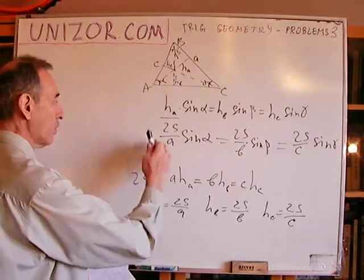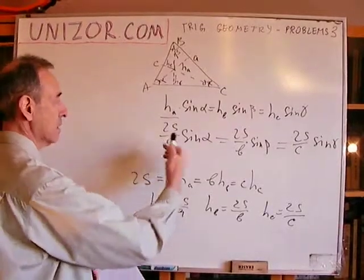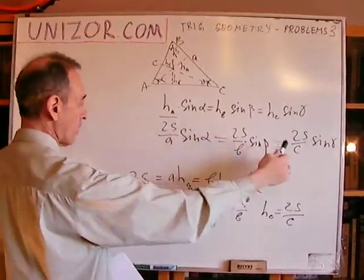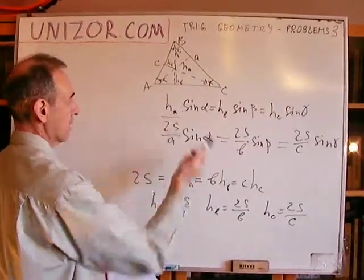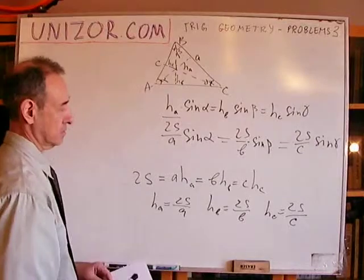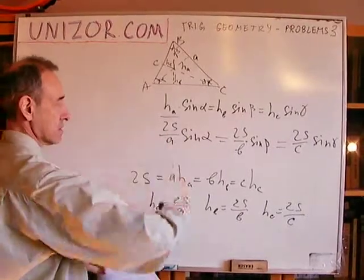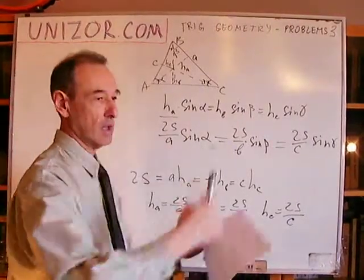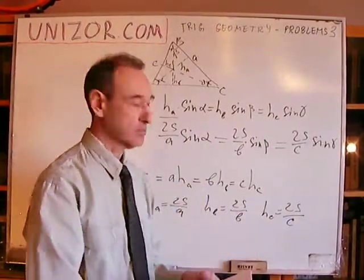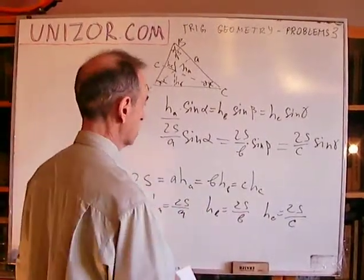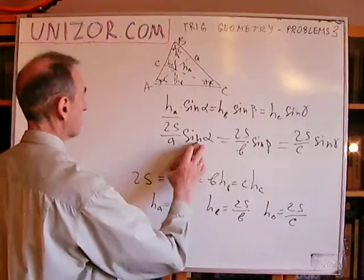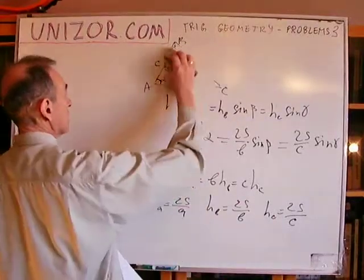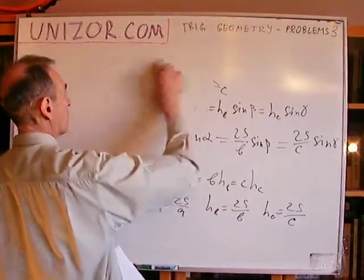This is basically the proof. We start from the law of sines, invert it, multiply it by 2S, and we get this result. Everything is reversible in both directions. That's it for number one.